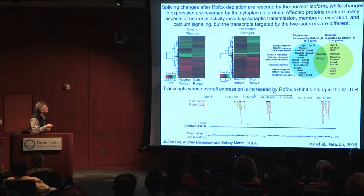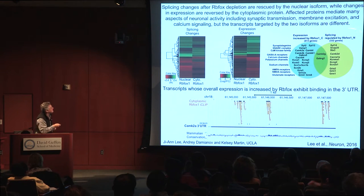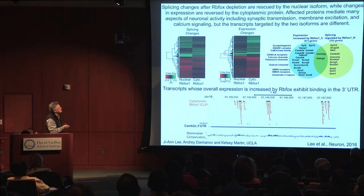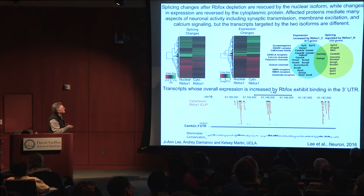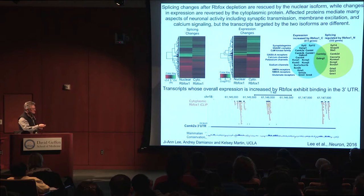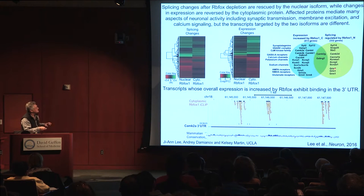Analyzing these genes, we found many of the same splicing changes regulated by the nuclear isoform, but the genes regulated by the cytoplasmic isoform were in the same functional categories — things like GRIN1 regulated at the splicing level versus GRIN2 regulated at the expression level, CaM kinase 2A versus CaM kinase 2D — but they were largely separate sets. So there seemed to be two arms of this complicated regulatory pathway, one cytoplasmic and one nuclear, regulating common functions but different genes.